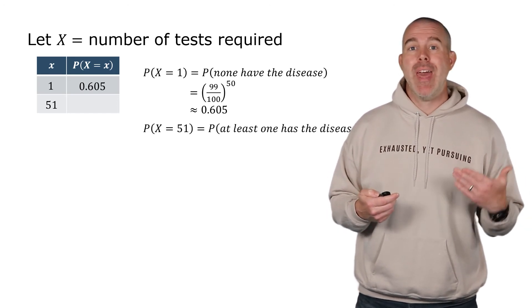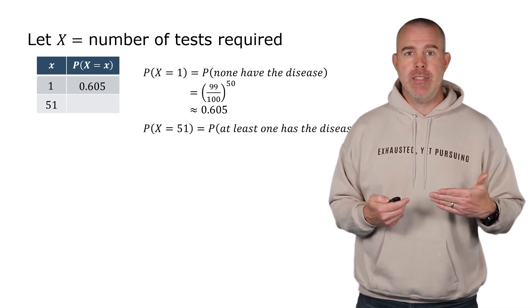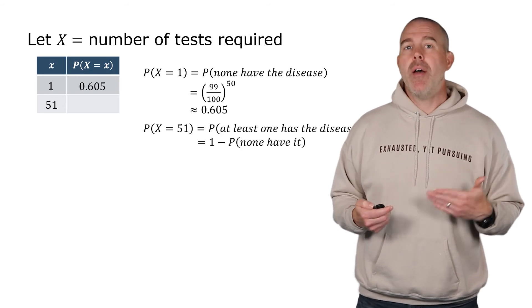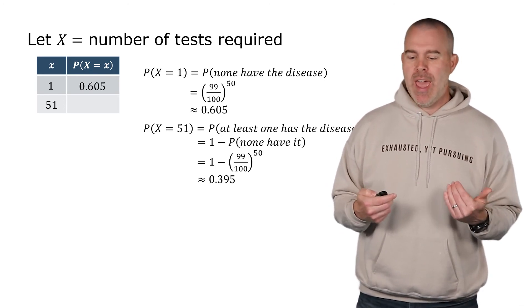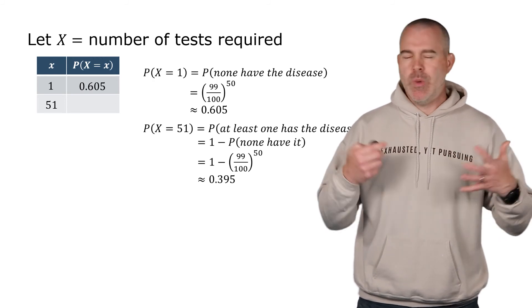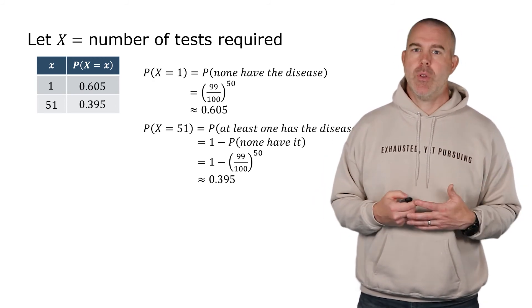Now the 51, we could just use the complement rule and just subtract that from one. But you could formally say, well, the probability that at least one has the disease, that's the 51. Well, that would be one minus the probability of none. So you subtract those two, and you get about 0.395, which we know because those two should add up to one.